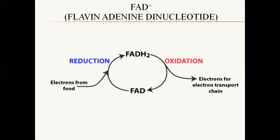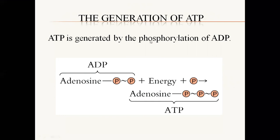We are talking about ATP synthesis. ATP is adenosine triphosphate — tri means three phosphates, so you have three phosphates with adenosine. ATP formation: you have adenosine diphosphate plus energy, which requires the presence of energy. ATP is energy, and we will learn in detail how ATP is synthesized.